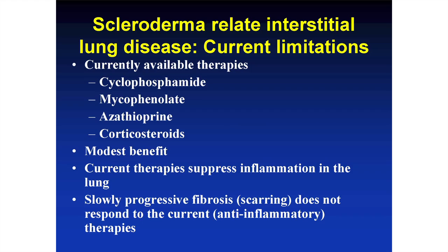There are multiple currently available therapies: cyclophosphamide, mycophenolate, azathioprine, and steroids. These are useful and have a role in treating scleroderma, but their benefit is modest. If you look at what happens in the lungs in scleroderma, you can divide it into two parts: one is inflammation and the other is fibrosis. Think of inflammation as a red, irritable ulcer if you were to look at the skin.